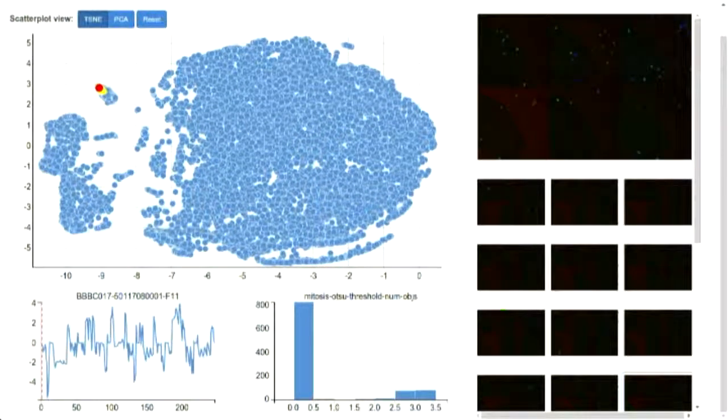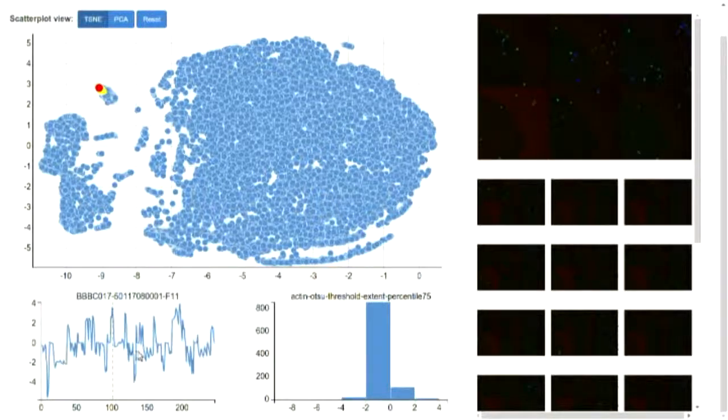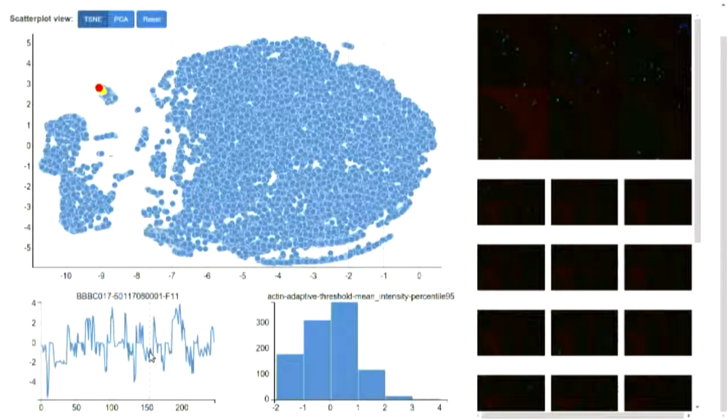You can see that's updating the scatterplot. Then on the bottom here, what I have is a line plot. This represents the standardized scores for that large, high-dimension feature vector that I was talking about. When I click on that line plot, I get a distribution of that particular feature of how it appears across the entire data set.